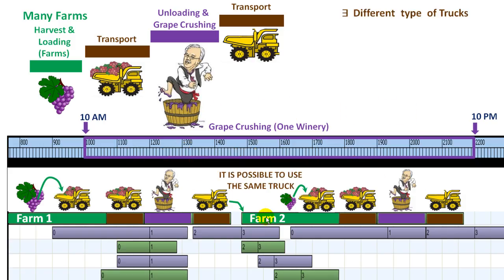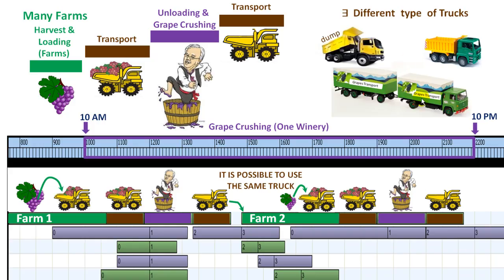Another hypothesis is that there exist different types of trucks. You have three different kinds of trucks, with a restriction that at least three of the dump trucks belong to the winery, at least two of another kind, and at least one of the third. The rest can belong to somebody else, but all of these belong to the winery.